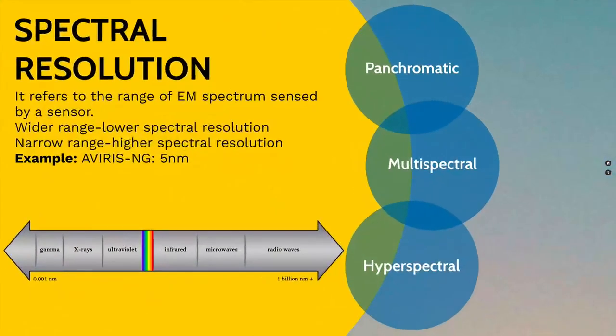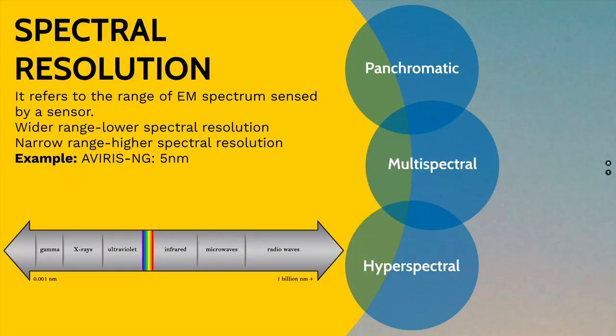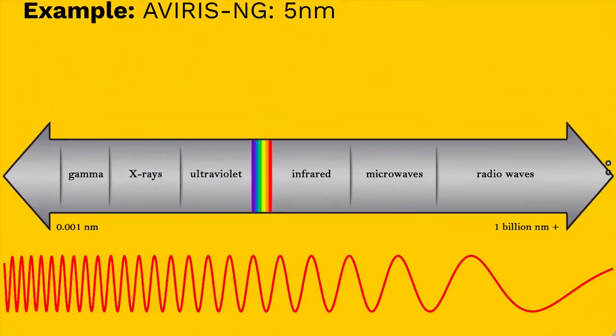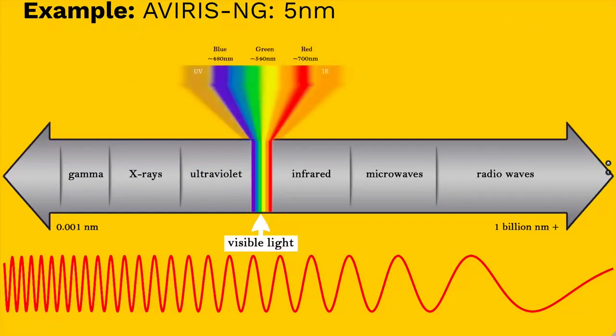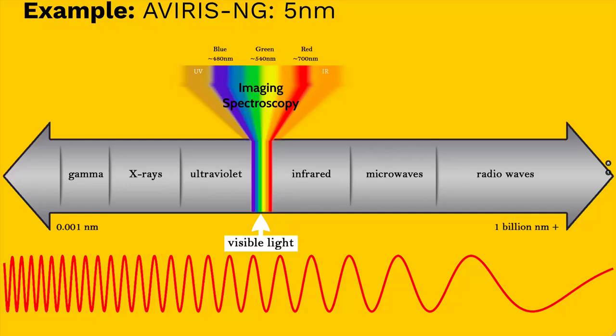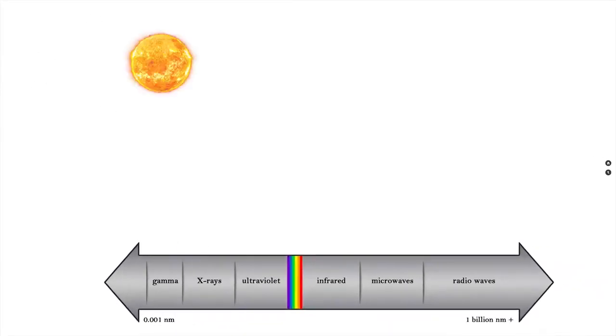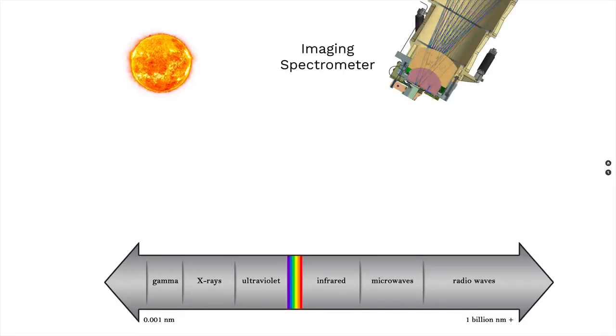We have learned about the electromagnetic spectrum in previous lectures. Let's take a quick revision. We know that spectral relates to the electromagnetic spectrum, which includes light that is both visible and invisible to human eyes. This is the electromagnetic spectrum, which is composed of thousands of wavelengths of energy.